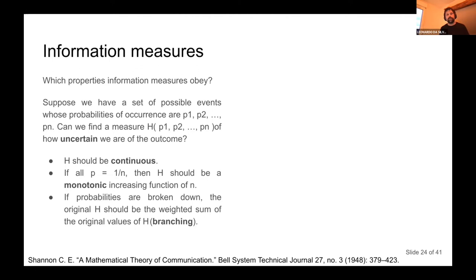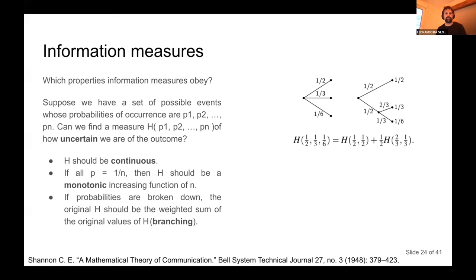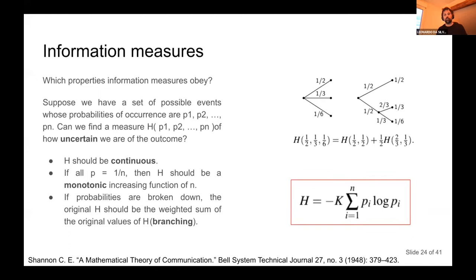The most famous measure is Shannon entropy, probably the first to be axiomatically defined. It requires three properties: the function is continuous; it increases monotonically when you increase the number of equally probable states; and if you split a system in two, the total uncertainty is the weighted sum of uncertainty of the parts — usually called branching. If the probability distributions are independent, this becomes additivity, and Shannon showed there is a unique measure that obeys all three properties.